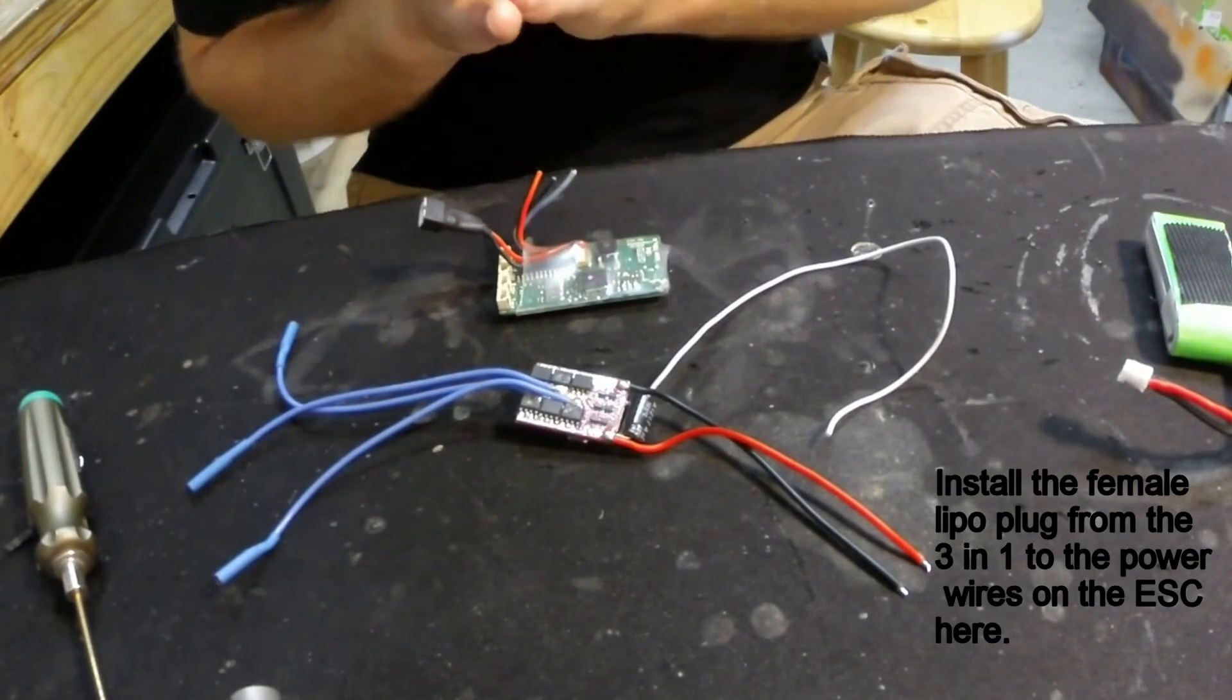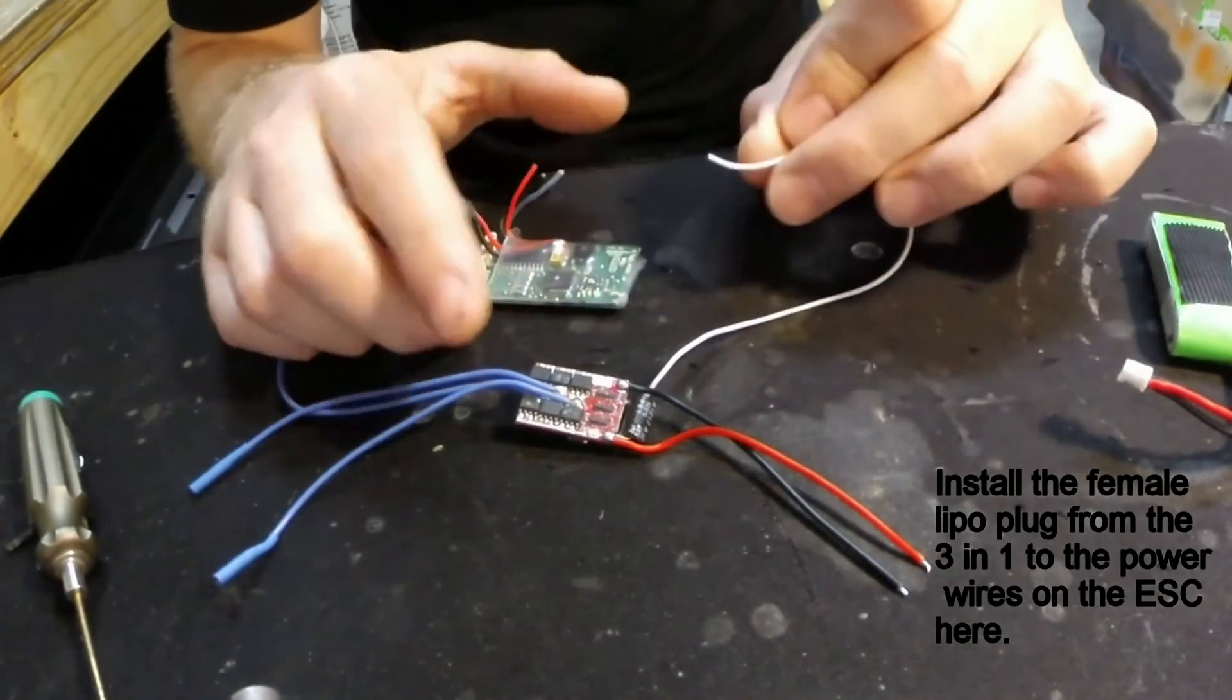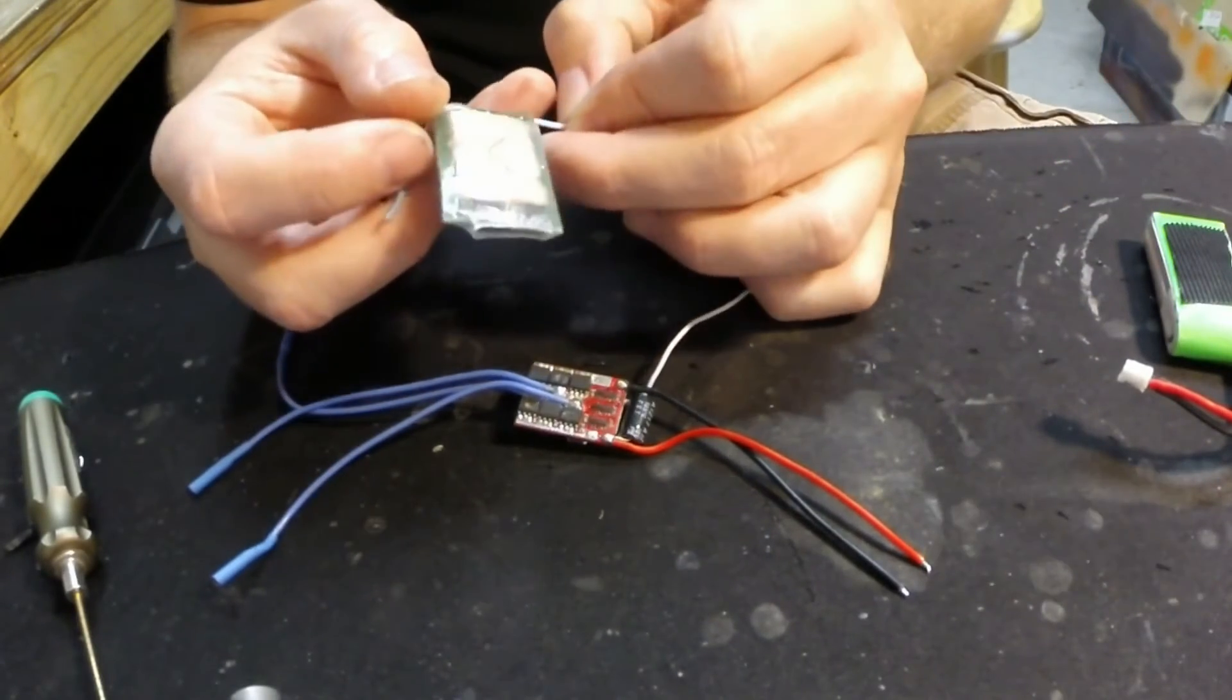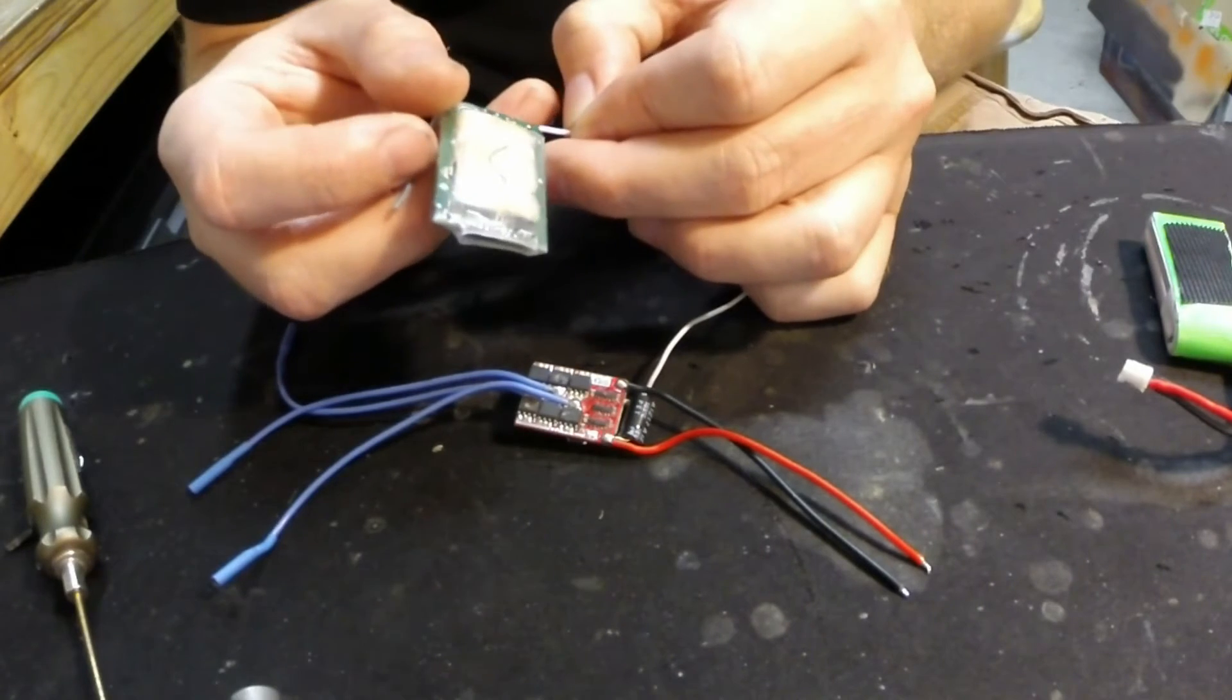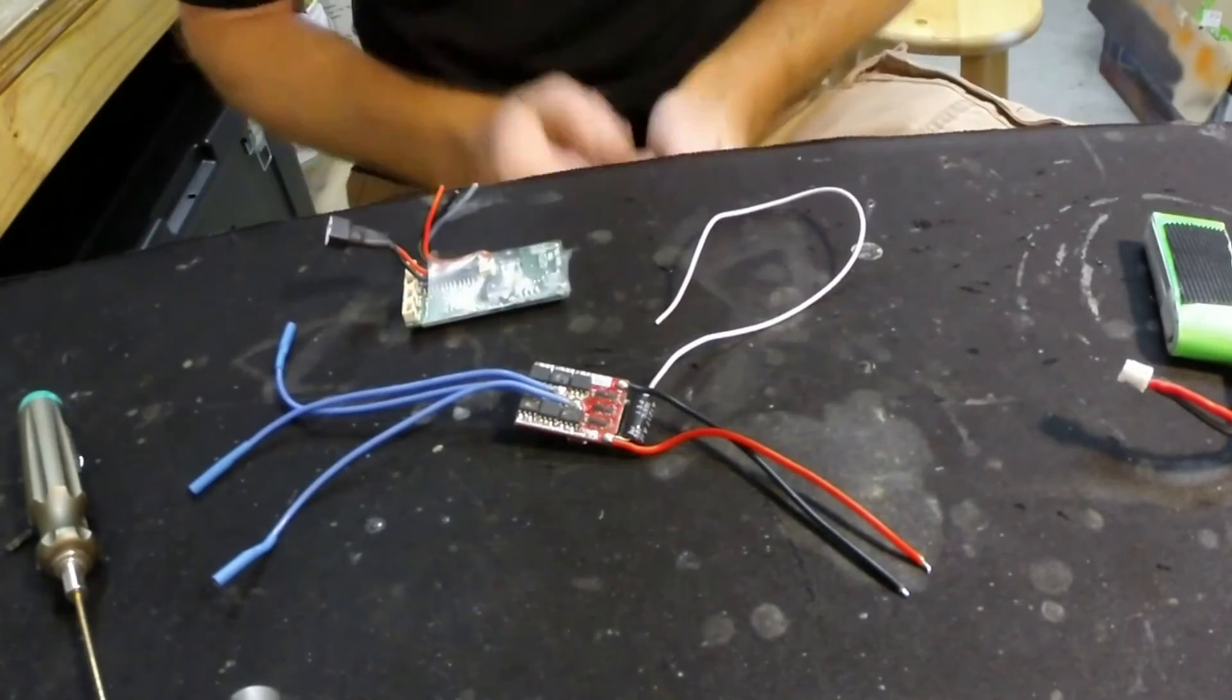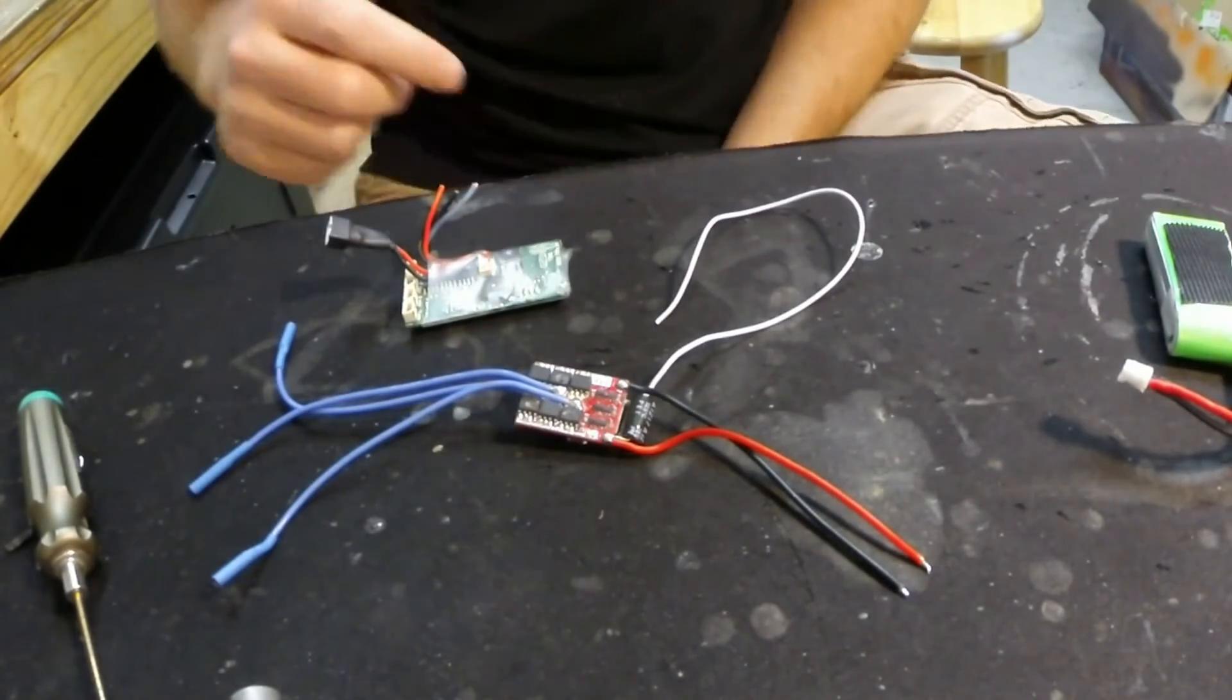The other thing we need is to get our throttle signal from the receiver to the ESC. So I'm going to strip this, tin it, and solder it to the signal spot. And I'll try to get a nice good close-up once I'm done so you can see where to solder the wire. All right, let me get this all soldered up and I'll be back in a few.